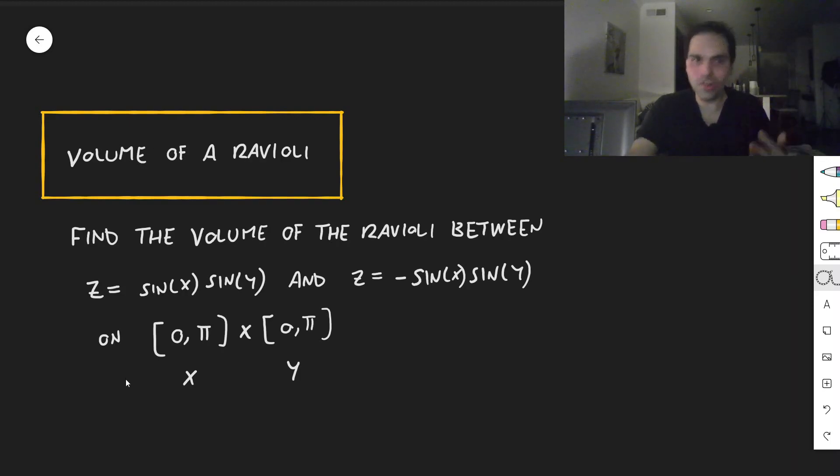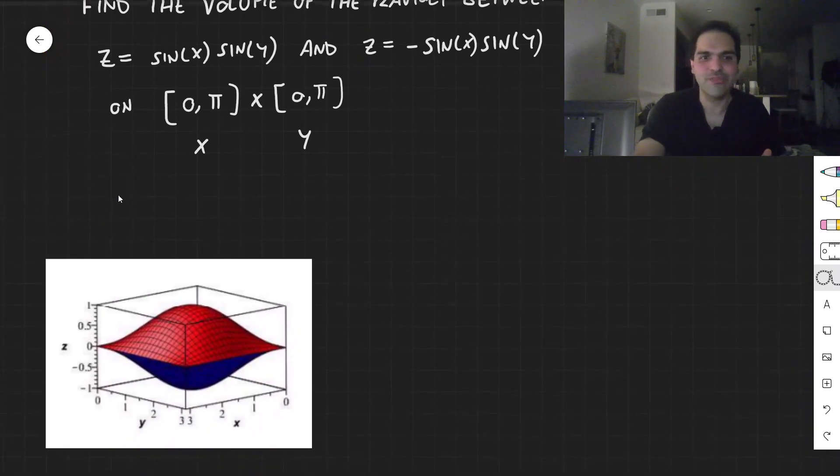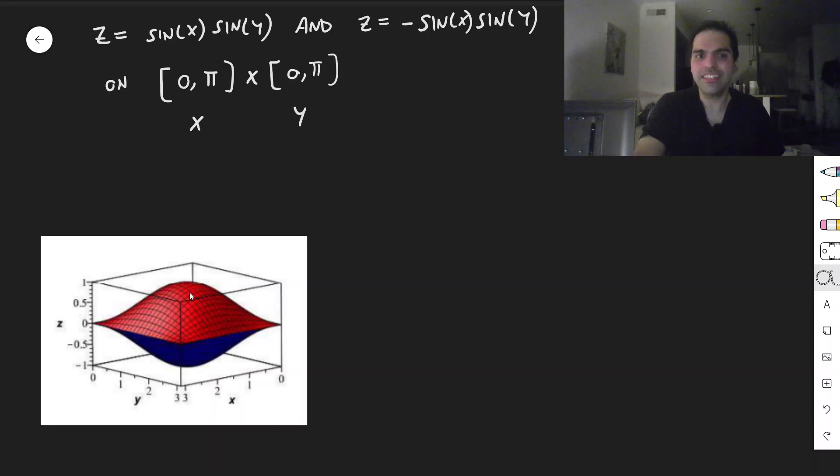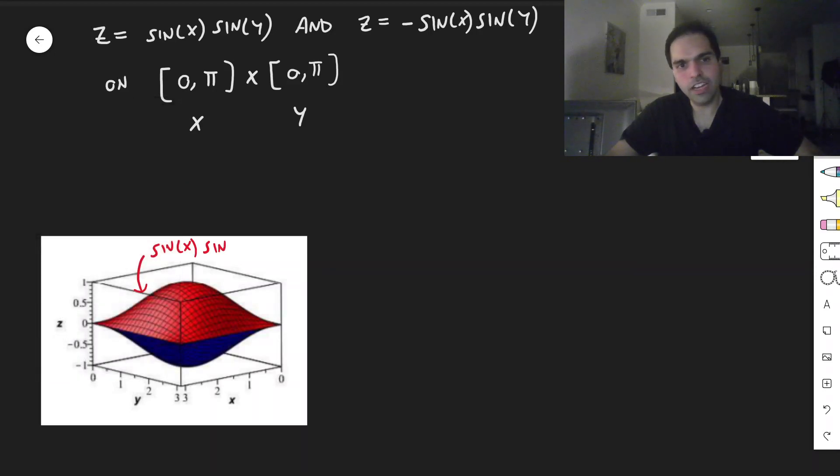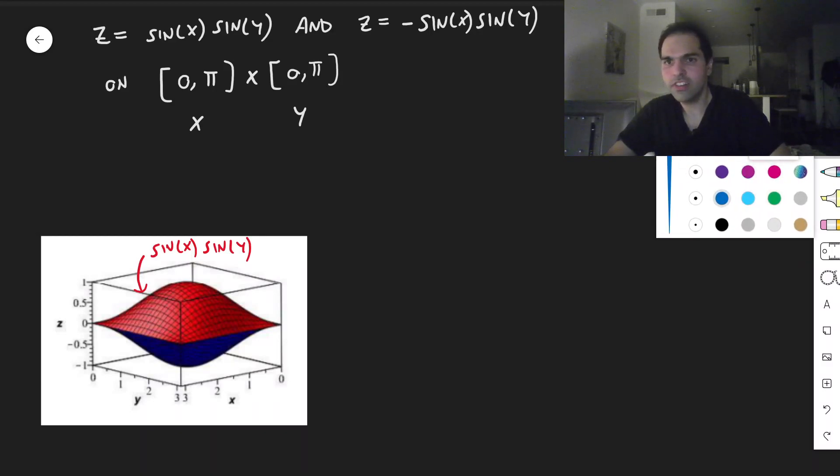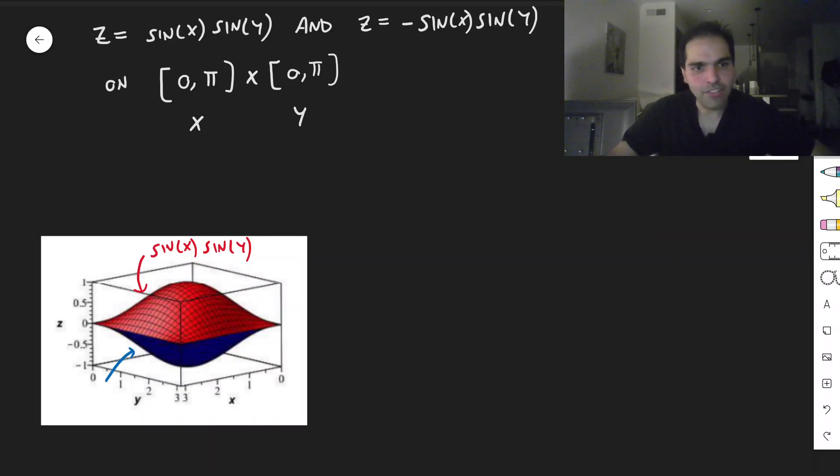And let's see what this looks like. Well, first, let's draw a picture. I'm very bad at drawing this, so here's the actual picture. So this is the ravioli squeezed between two functions. And the point is, the upper function is sine of x sine of y. And the lower function, let me change color, it's minus sine of x sine of y. So it's pretty symmetric.